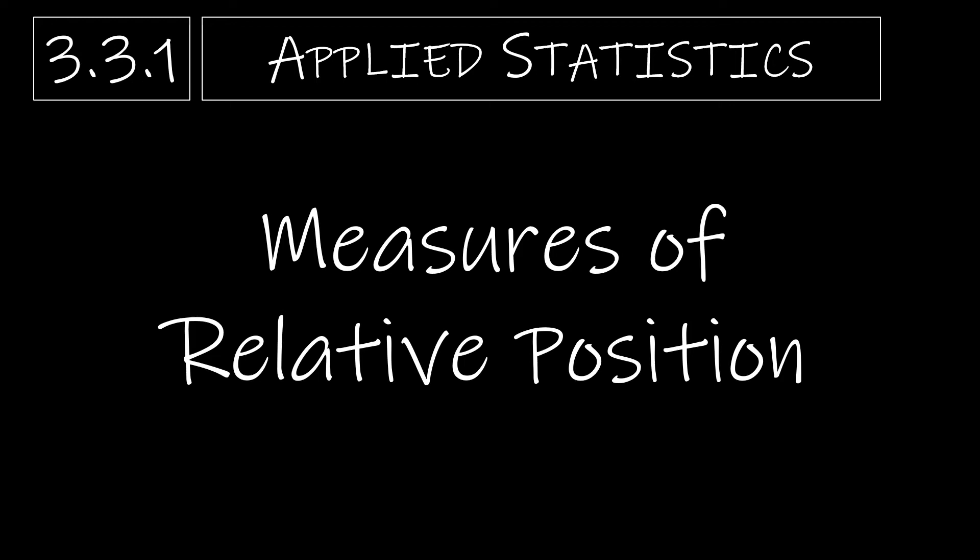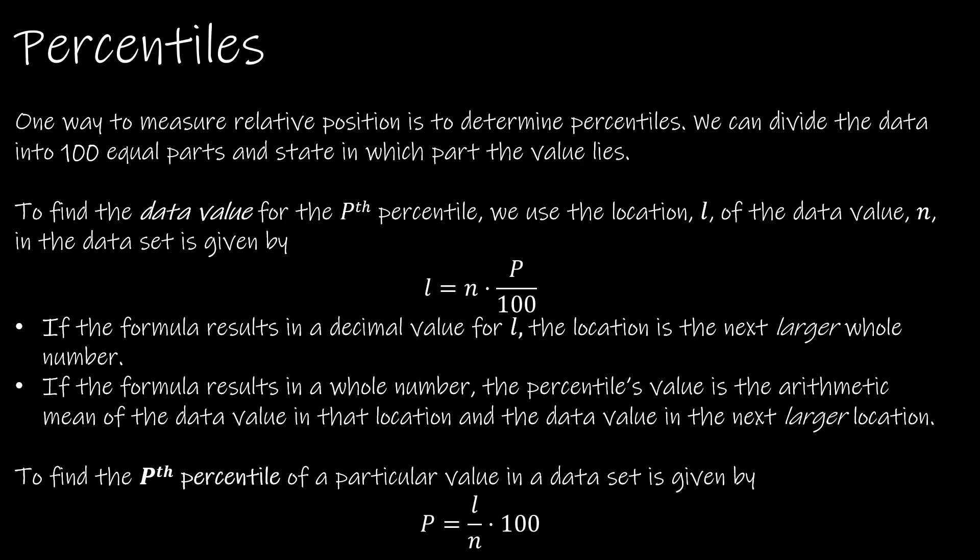This is the first video of section 3.3 talking about measures of relative position. The first measure of relative position we'd like to talk about is the percentiles. Essentially what we do in a percentile is we take all of our data and we divide it up into 100 parts, because we're dealing with a percentile, which means per 100.